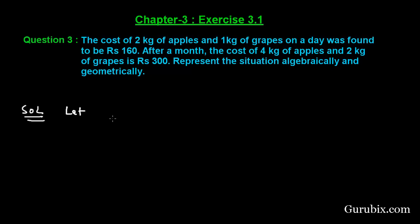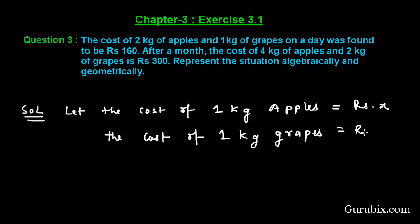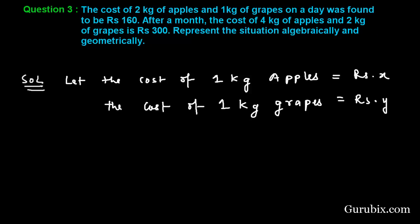Let us solve this question. Let the cost of 1 kg apples equal Rs. x, and the cost of 1 kg grapes equal Rs. y. Using the information given in the question we have 2 equations here. The first is 2 kg apples means 2x plus 1 kg grapes means y equals 160.